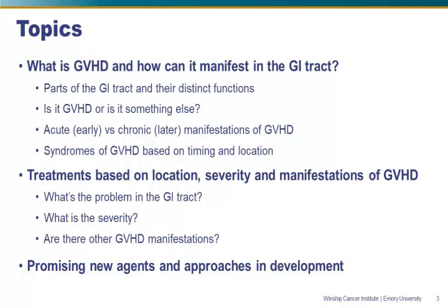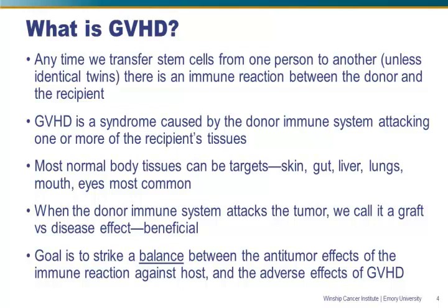Any time that we transfer cells from one person to another, unless those two people are identical twins, there's going to be an immunologic reaction between the two. With the preparative chemotherapy and/or radiation that we use, we're typically pretty good at preventing the host-versus-graft reaction, which we call rejection. But what we're talking about today is the opposite — the reaction of the donor cells against host tissues, which can occur at any time after the transplant. Most of the body's normal tissues can be targets, but the most common ones are the skin, the GI tract, the liver, the lungs, and the mouth.